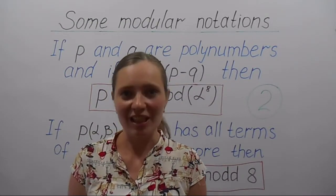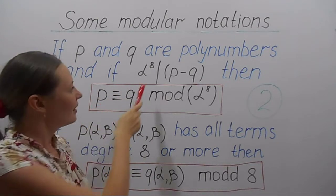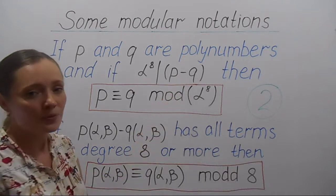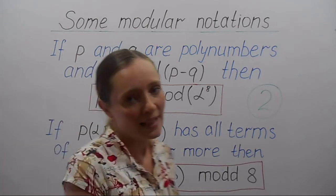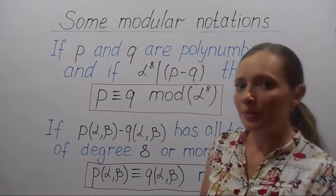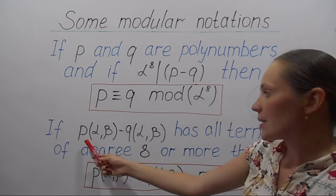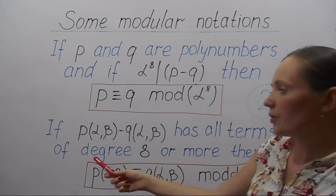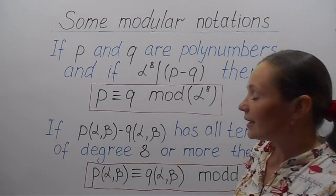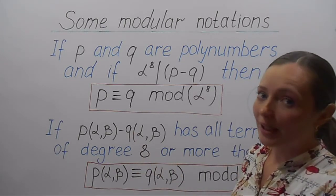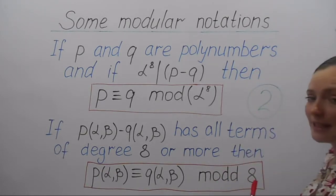Let me remind you some modular notations for this video. If p and q are two poly numbers such that α8 divides the difference p−q, then we say that p is congruent to q mod α8. This is the case when p and q are poly numbers of one variable. If p and q are poly numbers of two variables and the difference p−q has all terms of degree 8 or more — meaning the sum of powers of α and β in each term is not less than 8 — then we say that p is congruent to q mod d8.